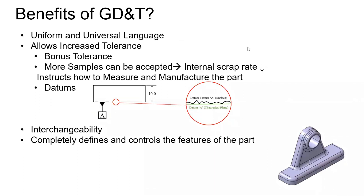Before GD&T was introduced, each design engineer or organization had their own standards, symbols, and techniques. When prints were shared with the manufacturing team, there was misinterpretation because each engineer's technique differed. This led to a high scrap rate since manufactured parts would not meet the specifications — the manufacturing engineer would produce parts of completely different shapes and sizes.